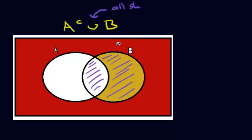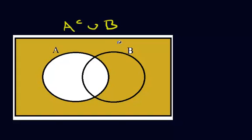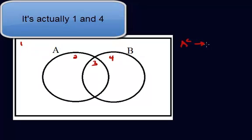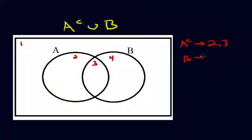The other way I wanted to do it would be to first label all the regions. So in this Venn diagram we have regions one, two, three, and four. What is A complement? A complement is regions two and three... wait, that's A.